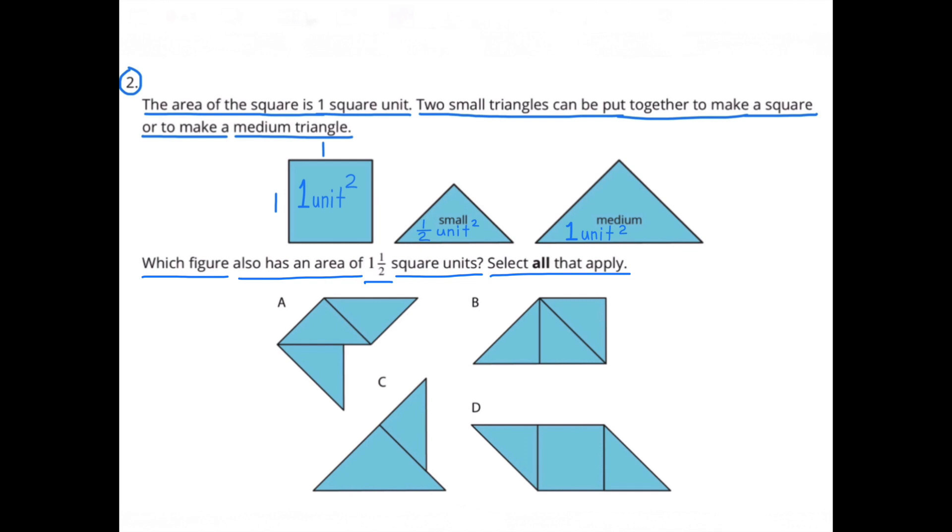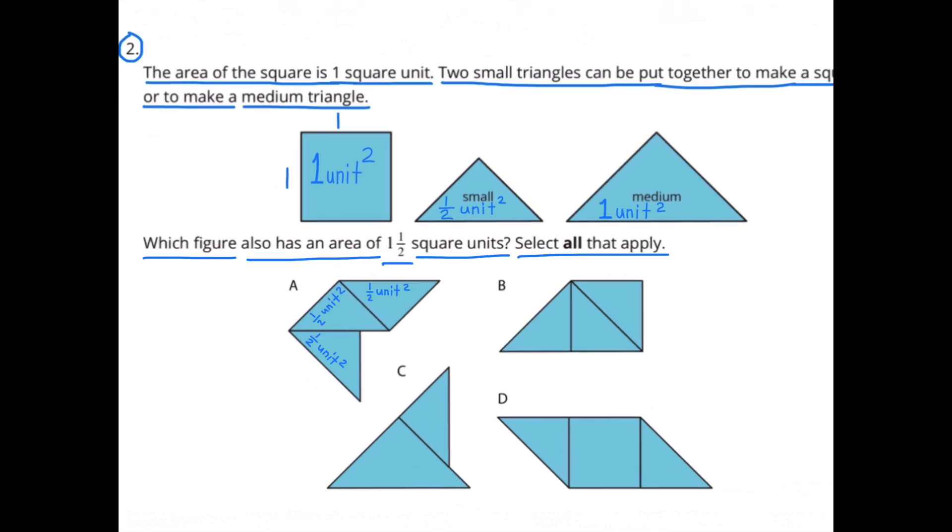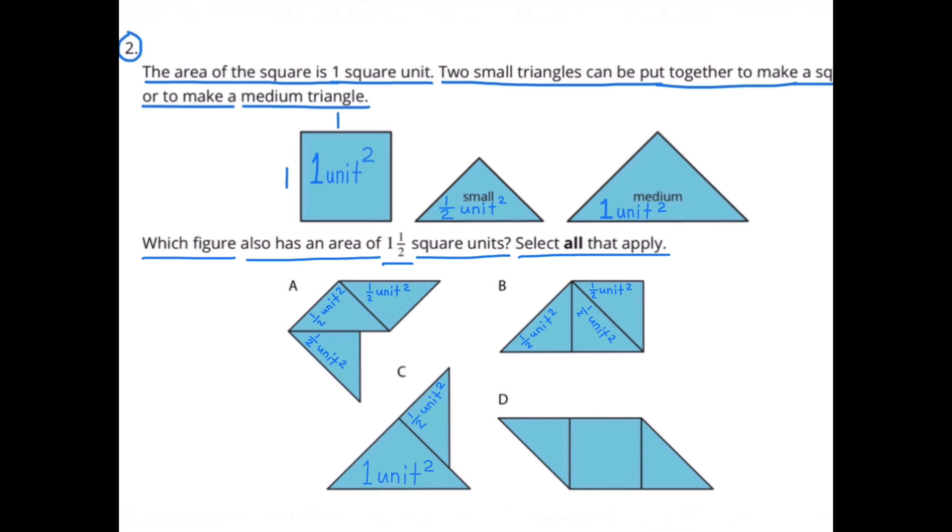Which figure also has an area of one and a half square units? The figures shown are: three small triangles, a medium triangle and a small triangle, two small triangles and one square.